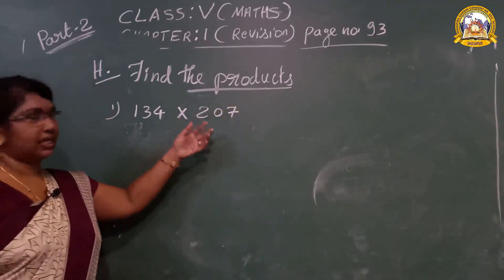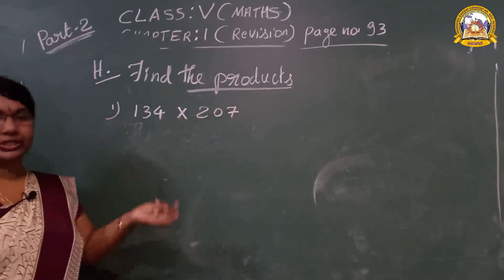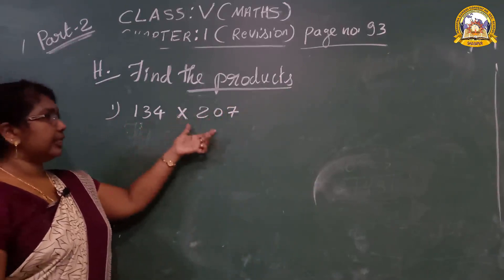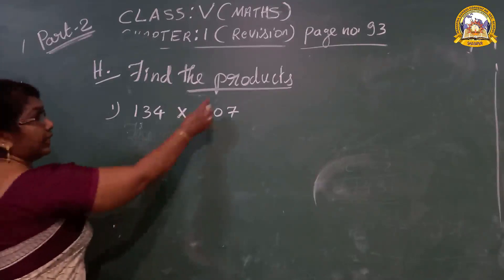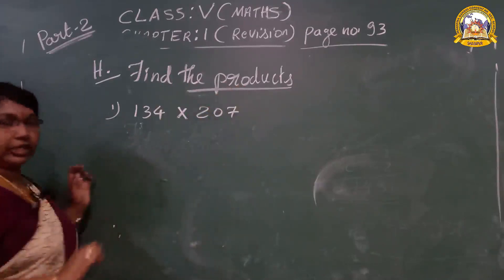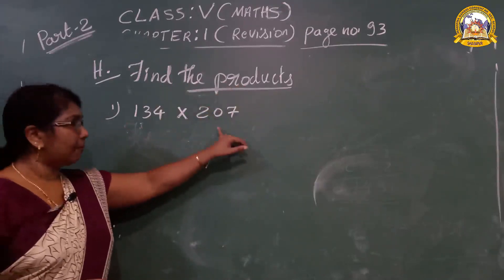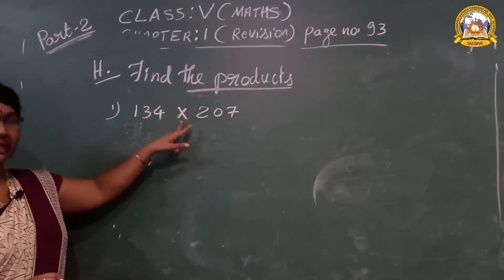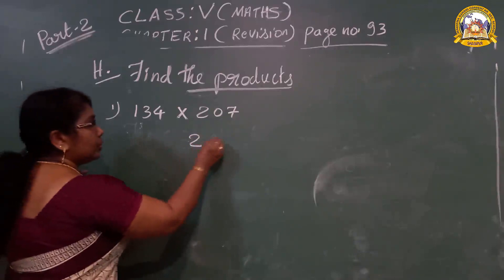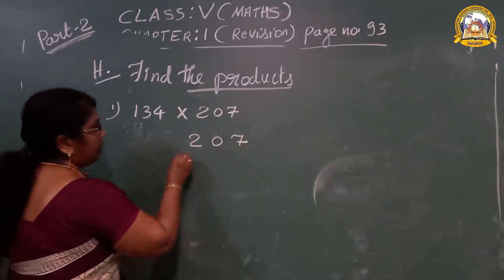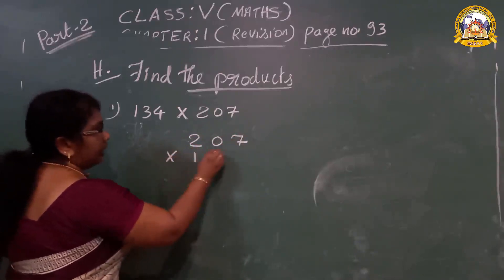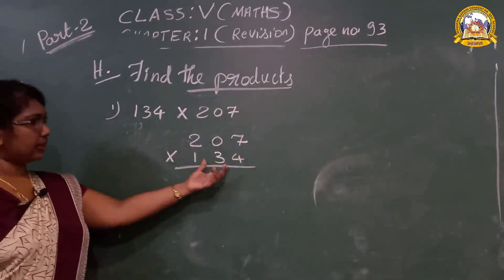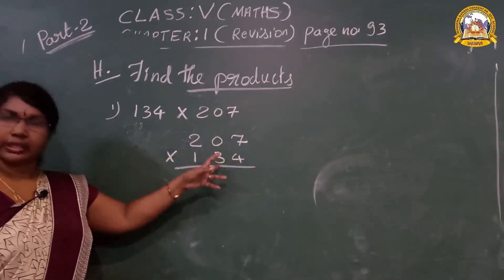This is a three-digit number. You can find the products. Product means multiply both numbers together. This is the symbol of multiplication. 207 multiplied by 134. If you write the first number also, both ways you will get the same answer.